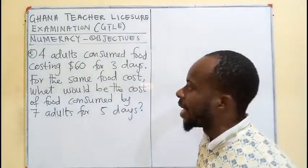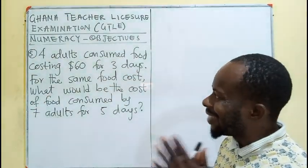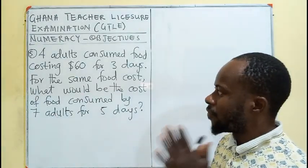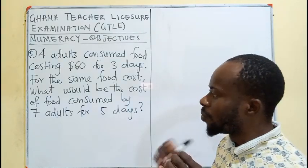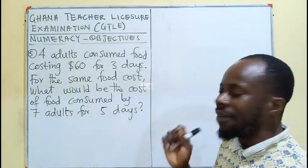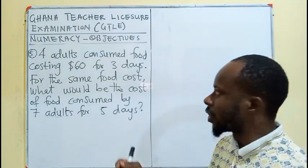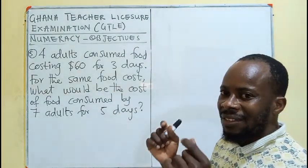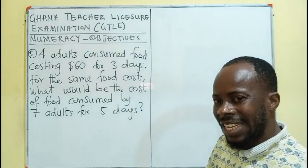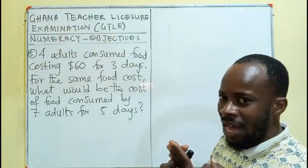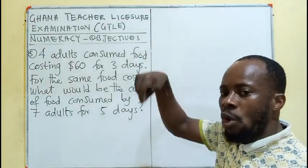Let's look at question number 5. Four adults consume food costing $60 for 3 days. For the same food cost, what would be the cost of food consumed by 7 adults for 5 days? The first statement gives us three quantities: 4, 60, and 3, and the next scenario gives us 7, 5, and the cost we are looking for.